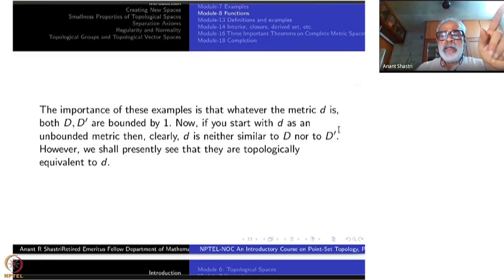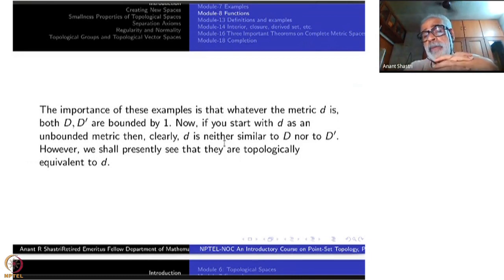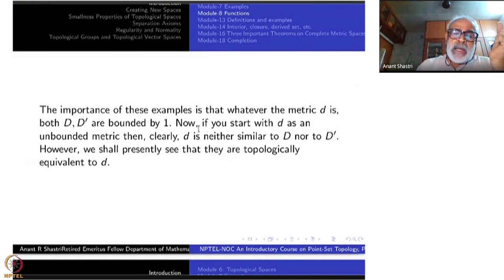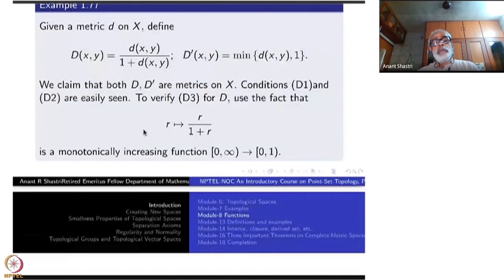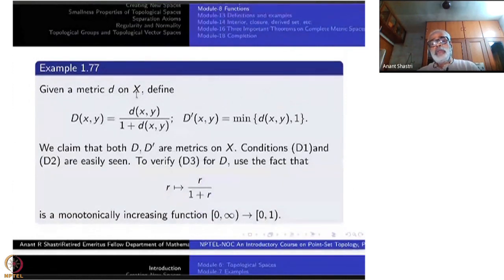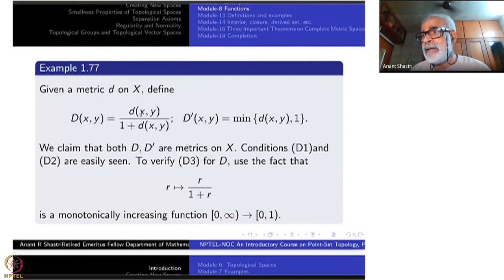My aim was to get a metric which gives the same topology. The claim is that the topology τ_d equals τ_D equals τ_{D'}. So they are all topologically equivalent — they are homeomorphic. Remember, the underlying set hasn't changed at all. So perhaps we don't even need an arbitrary function; the identity map itself will show the two topologies are the same.